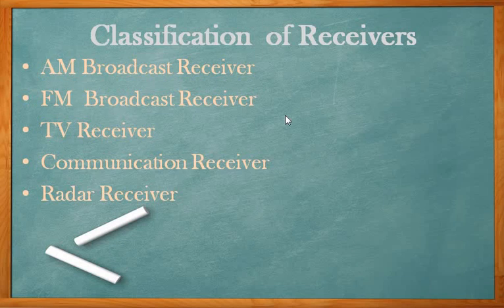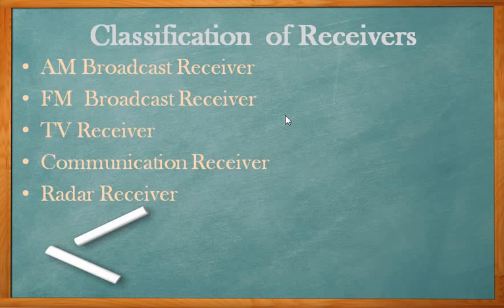To summarize the classifications: AM broadcast receivers are for long, short, and medium wave frequency ranges; FM broadcast receivers are for ultra high or very high frequency ranges; television receivers also use VHF and UHF frequencies; communication receivers are for telegraph or landline coding communication; and radar receivers are for long distance or space communication. These are the classifications and introduction of your receiver.